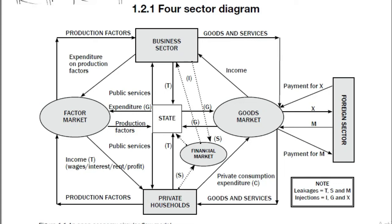Let's start with private households. Households are the primary economic participants because they are the owners of the four factors of production — they own land, entrepreneurship, capital, and labor. Households sell factors of production in the factor market to firms, as shown by this line.